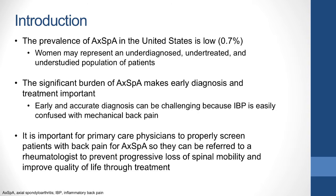The prevalence of axial SPA in the United States is estimated to be 0.7%, with AS and non-radiographic axial SPA both accounting for equal proportions of patients. Women with axial SPA, however, may represent an undiagnosed, untreated, or understudied population.